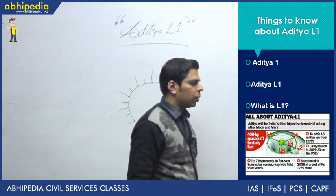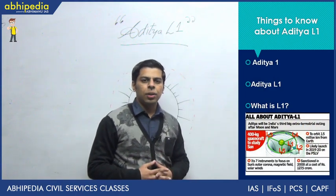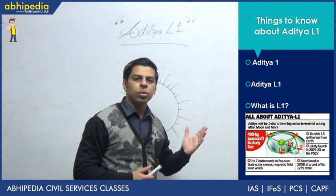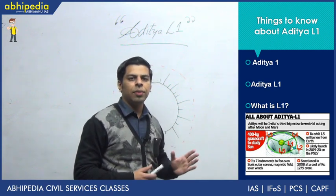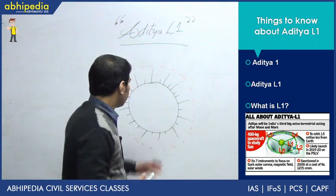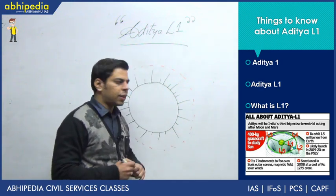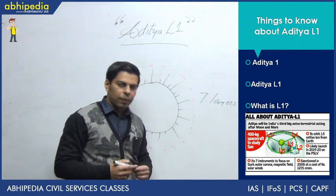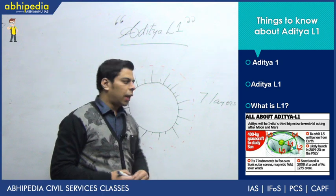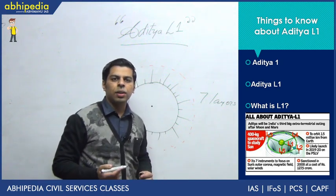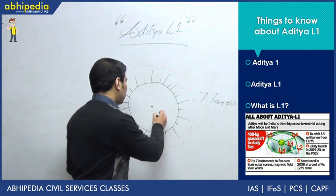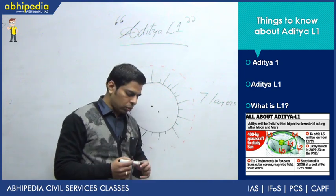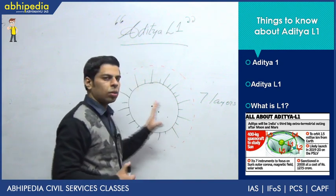Before starting about Aditya L1 and the difference between Aditya 1 and L1 mission, we should first decode the layers of the sun, because this Aditya mission is going to study different layers. We should be familiar with the basic terminologies. The sun has seven distinct layers. From a solar system point of view, the innermost zone of the sun, as in case of earth, is called the core. Then it is followed by the radiative zone and then the convective zone. These three zones together comprise the innermost layers of the sun.